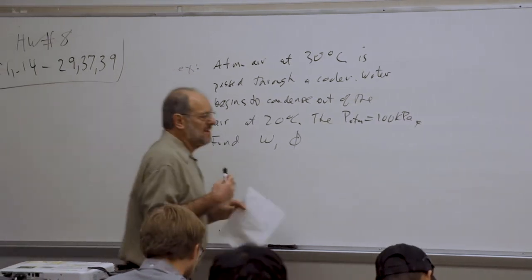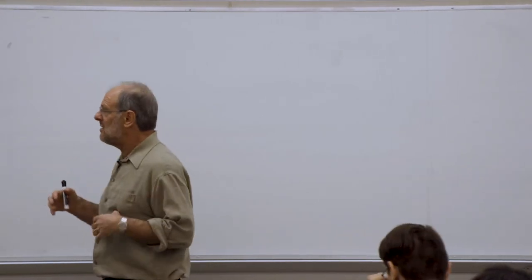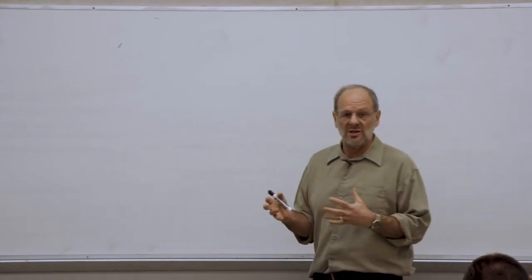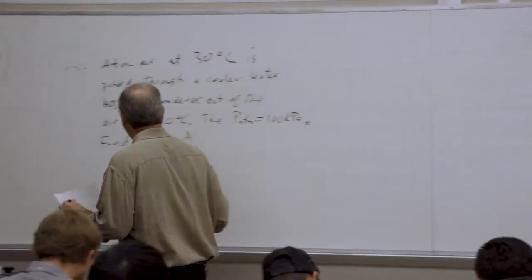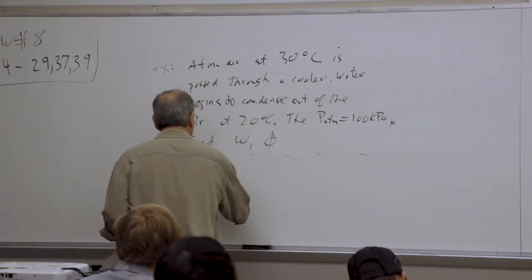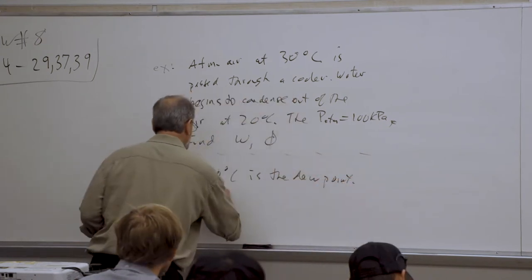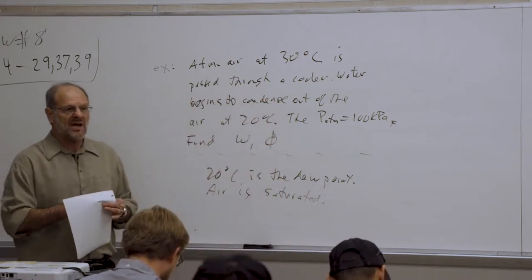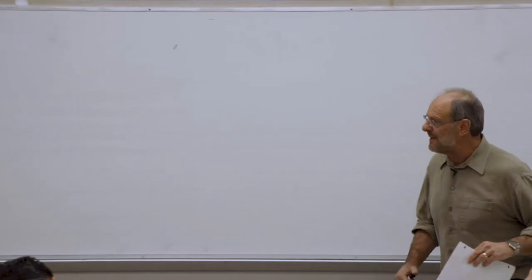This problem is an illustration of the dew point. We have water vapor in the air at 30 degrees Celsius; as we cool it, condensation occurs at 20 degrees. So 20 degrees Celsius represents the dew point — at this point, the air is saturated. Saturated air is air holding the maximum amount of water vapor at that particular temperature. So how do we use this to determine omega and phi?